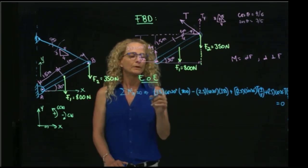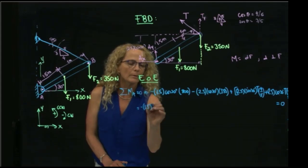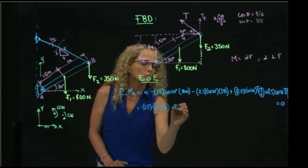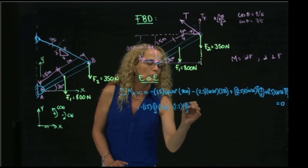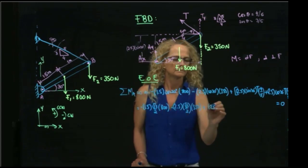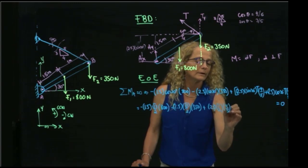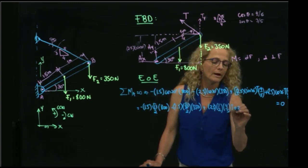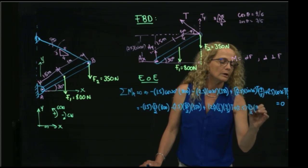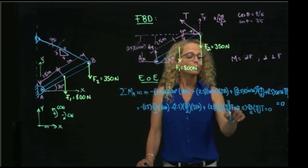So as you see here, let me rewrite it with all these sines and cosines. So here we have negative 1.5 cosine of 30, square root of 3 over 2, times 800 minus 2.5 square root of 3 over 2 times 350 plus 2.5...